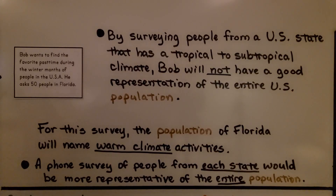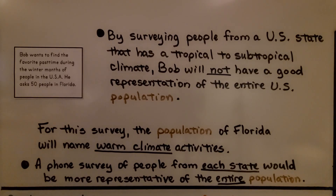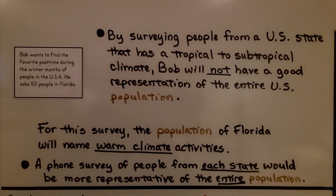In the previous example, Bob wants to find the favorite pastime during the winter months of people in the USA, and he only asked 50 people in Florida. By surveying people from a U.S. state with a tropical to subtropical climate — Florida is warm — Bob will not have a good representation of the entire U.S. population. What about people in Michigan or Maine? The population of Florida will name warm climate activities. A phone survey of people from each state would be more representative. He needs to speak to people in other states, not just Florida.